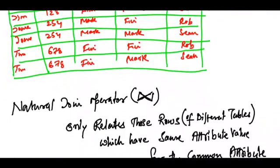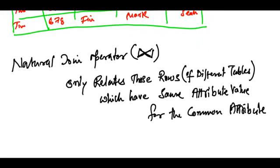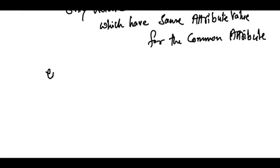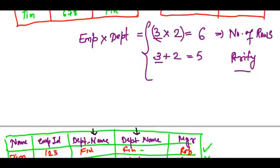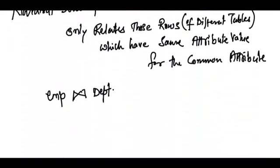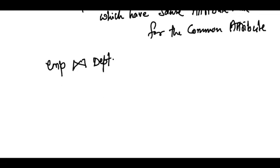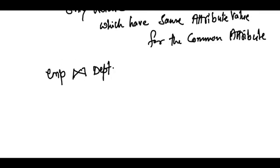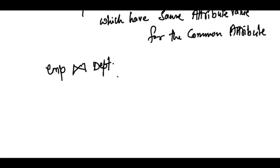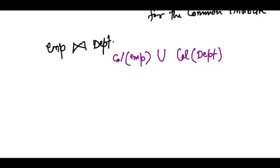Let's see what is the result of the join operator on employee and department. The number of columns in a natural join operator result is all the columns in the union of the columns of employee union the columns of department.